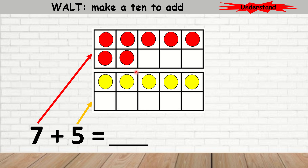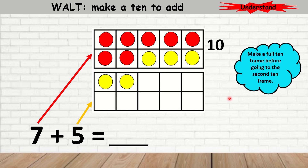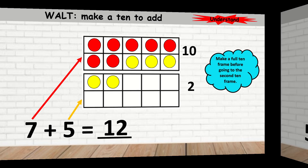Now again, Ms. V's made a mistake because she did not complete the 10-frame. You need to complete the first 10-frame before you move on to the next 10-frame. So now I have a group of 10, and I have 2 left in the second 10-frame. So 10 plus 2 is 12. So 7 plus 5 is equal to 12.